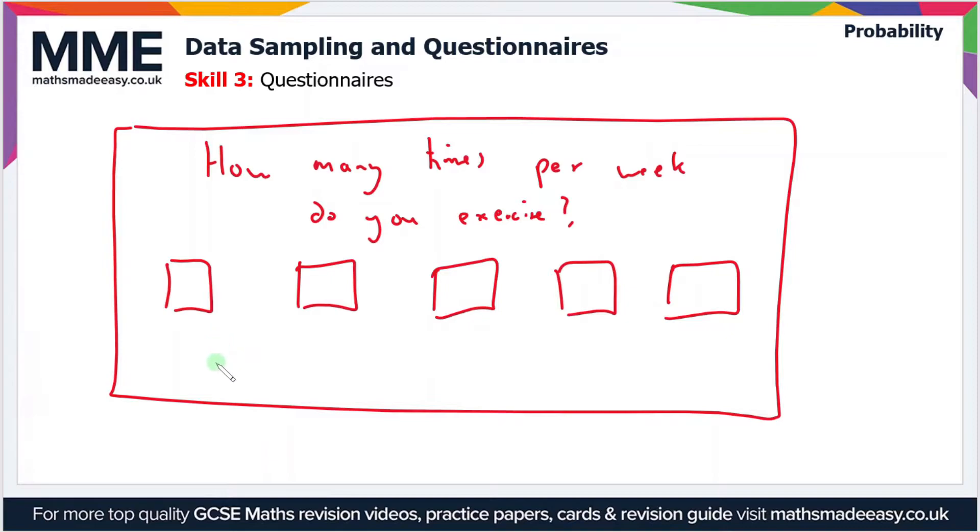Our question is asking people how many times per week they exercise. What if someone doesn't exercise at all? They need a response box, so the first one should be zero. Now if we move on, we can't have zero to one as our next response box because that has some overlap.